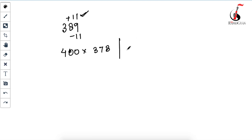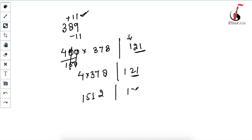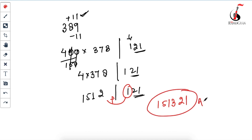Write 121 here and underline the last two digits, leaving the 1 apart. Now divide 400 by 100 — you get 4 multiplied by 378, with 121 alongside it, underlining the last two digits. Multiply 378 by 4: you get 1512. Combined with 121, you take 21, carry the 1 over, and add it to get 1513. So 151321 is your answer — the square of 389 is 151321.